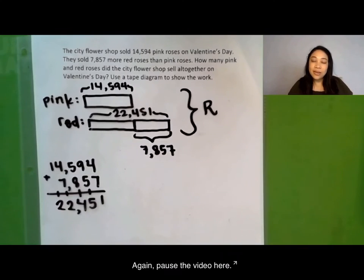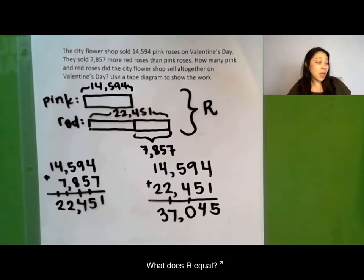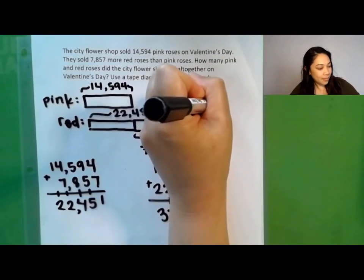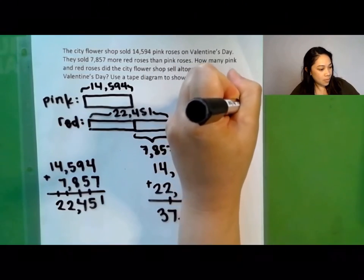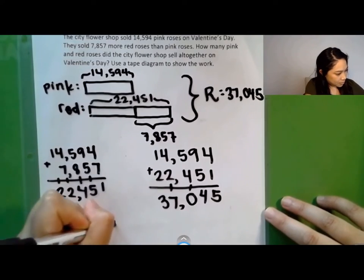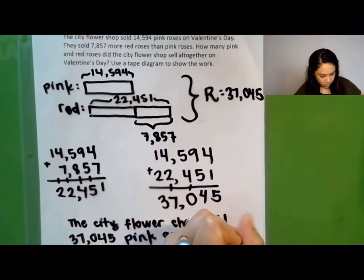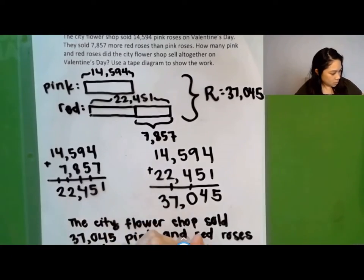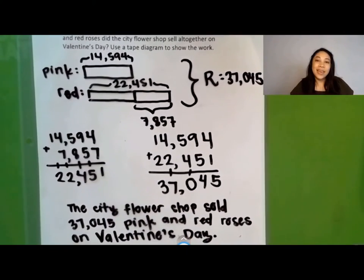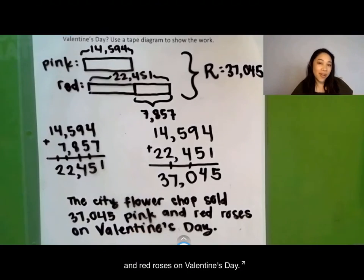Pause the video here, solve, and then we'll compare our work after. What is r equal? r equals 37,045. Let's now write a statement to answer the question. The city flower shop sold 37,045 pink and red roses on Valentine's Day.